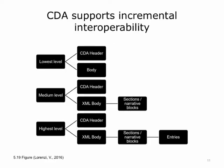CDA has a special feature that allows incremental interoperability. You always need a header and a body. For the lowest level of interoperability, the body is not structured and could consist of anything — examples include a PDF file, a Microsoft Word document, or a scanned image file. A CDA document containing a PDF file is better than just having the PDF document, because you have a header to index it. You know what kind of document it is, when it was created, and who created it, and you can start doing useful things with the structured header data.